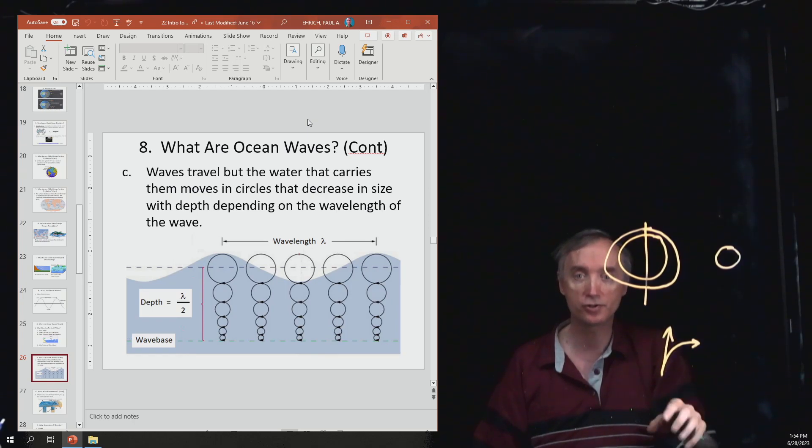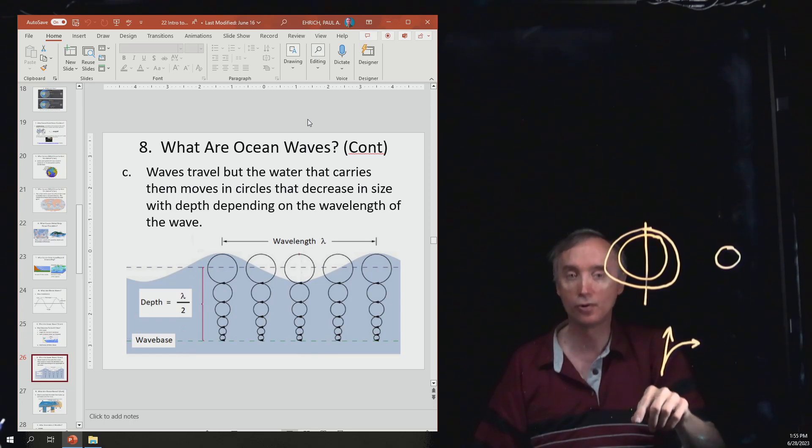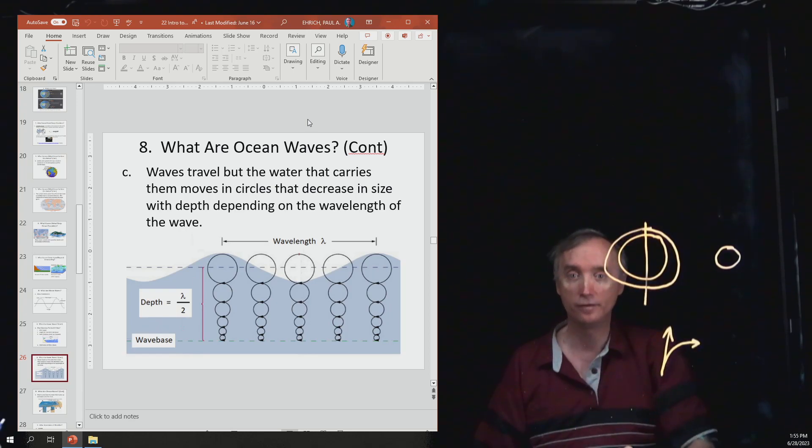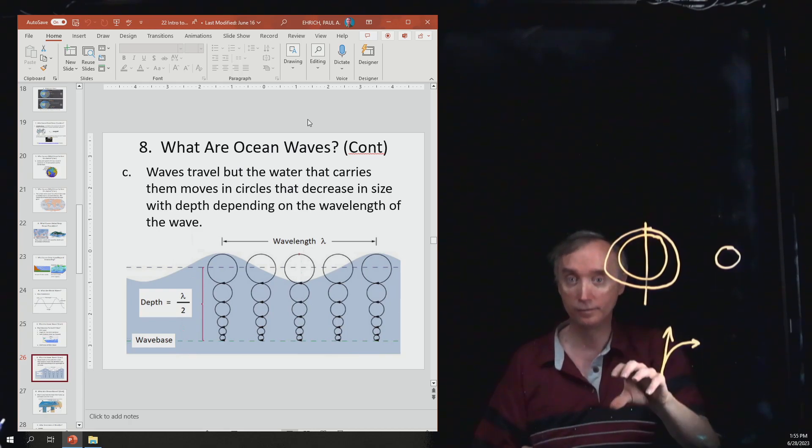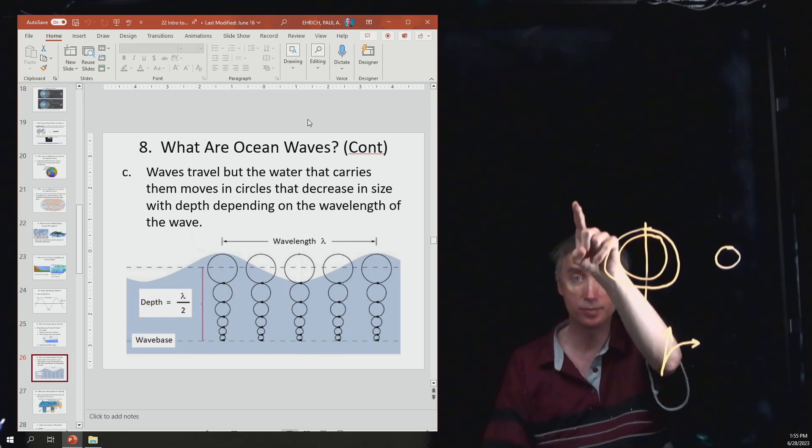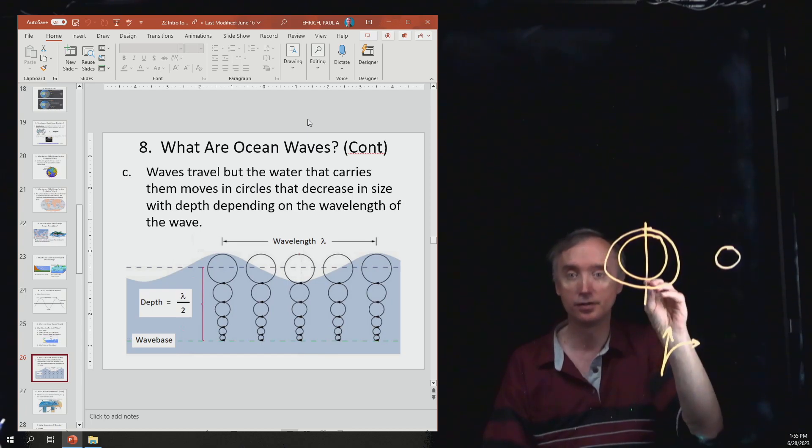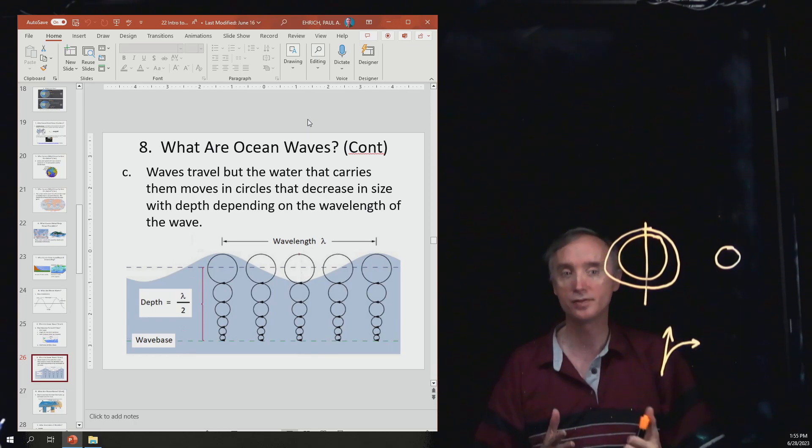So if you are a fish, if you're below the wave base, there could be a storm up here, but you wouldn't notice because you're below that wave base. And that wave base, the depth to the wave base is one half of the wavelength. So you take the wavelength, the distance between a crest and another crest, divide that by two, and then if you're any deeper than that, you wouldn't even notice that there's any wave action going on.